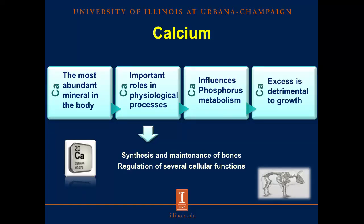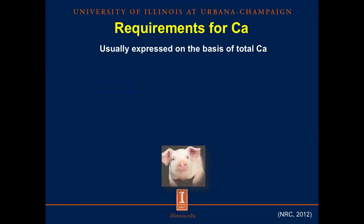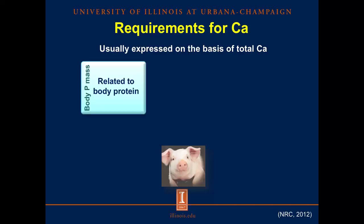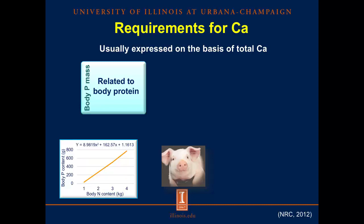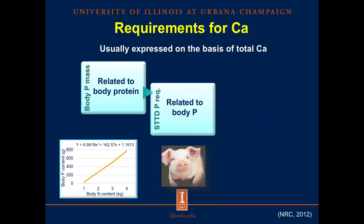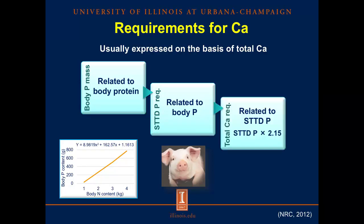Moreover, excess calcium is detrimental to growth. Requirements for calcium have been expressed on the basis of total calcium. First, body phosphorus mass is calculated based on body protein due to the linear relationship between body nitrogen content and body phosphorus content. Then the requirement for digestible phosphorus is calculated based on body phosphorus mass and is expressed as standardized total tract digestible phosphorus, or STTD phosphorus. Finally, by multiplying the digestible phosphorus requirement by 2.15, the requirement for total calcium is obtained.